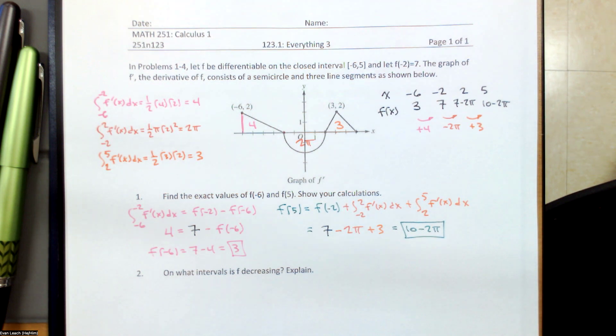On problem 2, on what intervals is f decreasing, f is decreasing when f prime is negative. So we see that f prime is negative on the interval from negative 2 to 2. And so we'll say f is decreasing on the interval from negative 2 to 2.